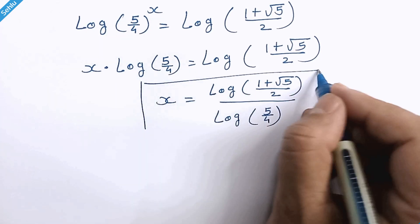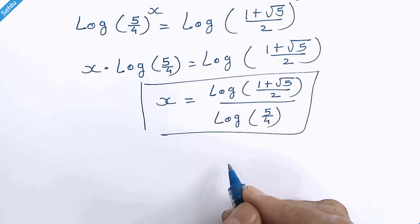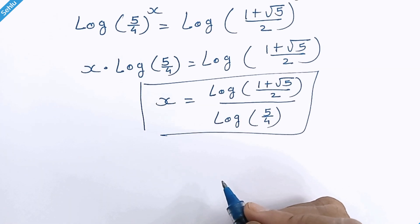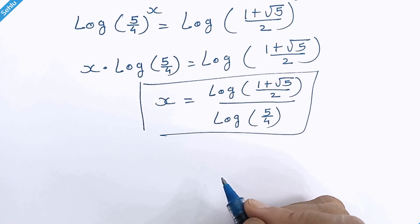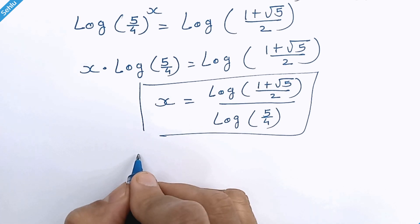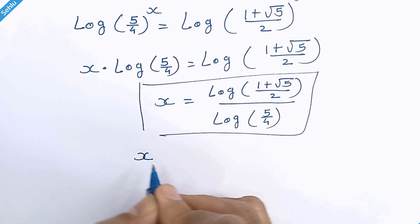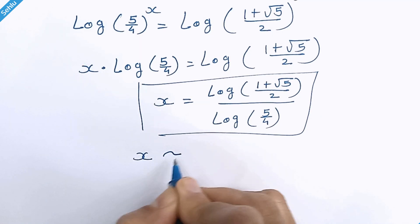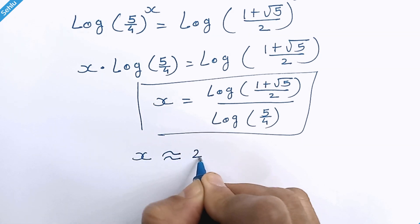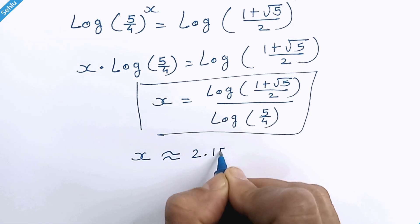And this is our answer. You can use a calculator to find x in decimal, which is approximately 2.1565.